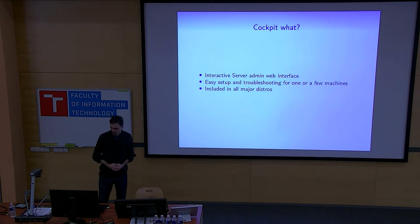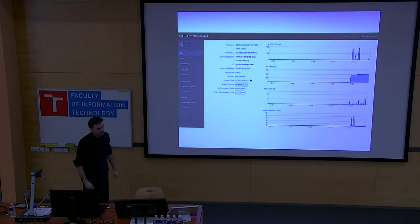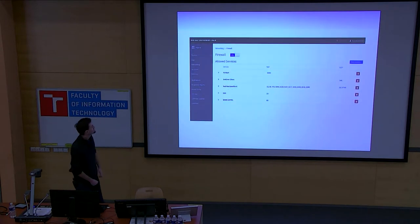It is just an apt or yum or dnf install away from all the major distros: Fedora, Atomic, RHEL, Debian, Ubuntu, Arch and others. So what does it look like? This is the system page, gives you summary information about your system. You can drill down into extra details, and the menu on the left shows you the available administration pages. You can also switch between multiple machines here.